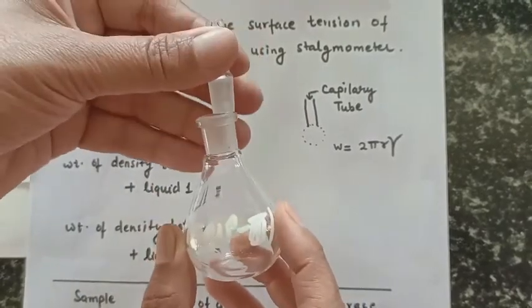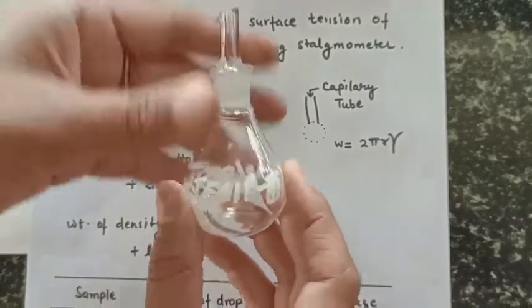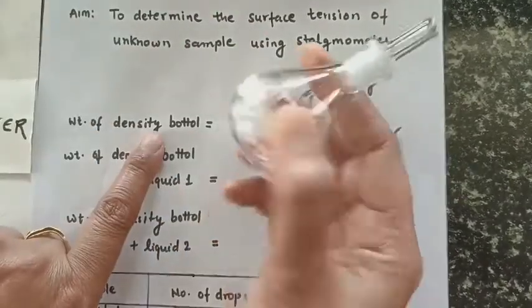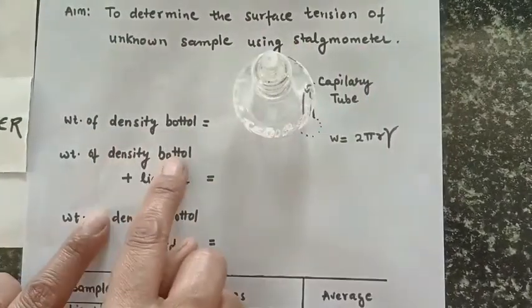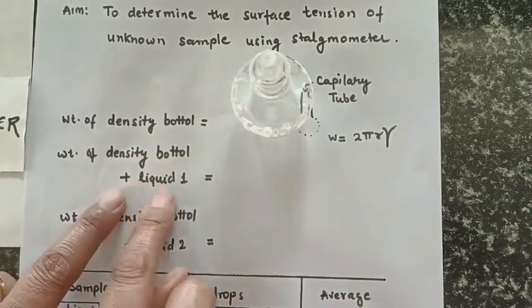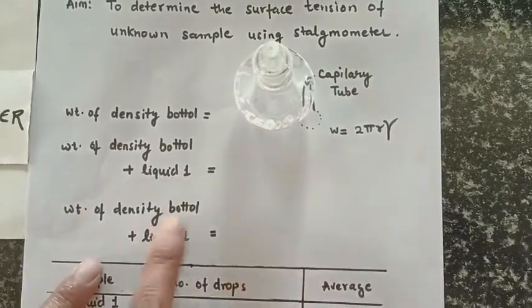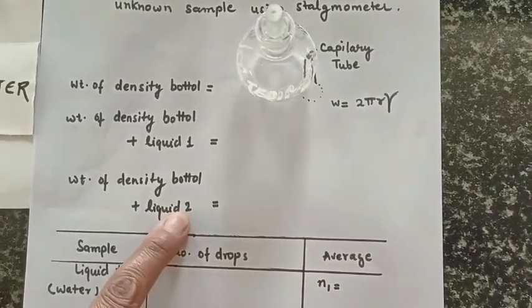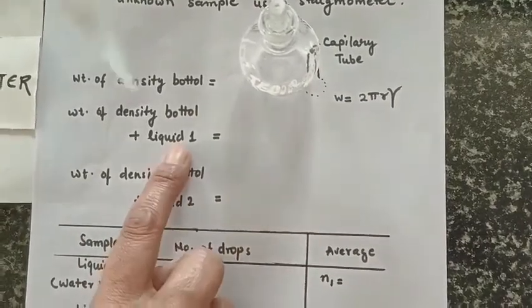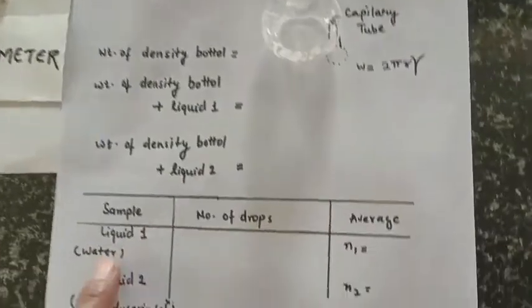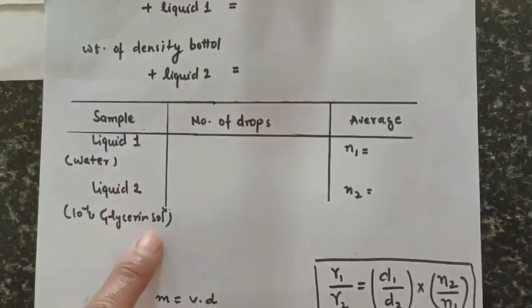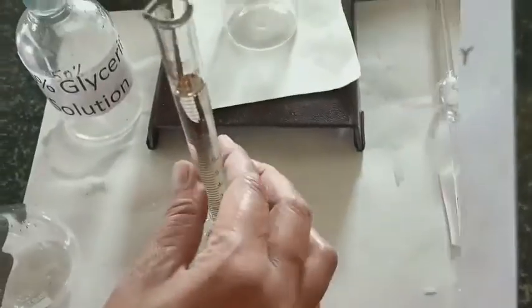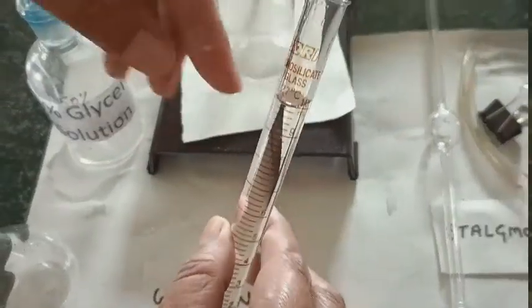To determine density or weight, we need this density bottle. This is an empty density bottle — we fill it with liquid one, take the weight, then fill it with liquid two and take the weight. Liquid one is distilled water and liquid two is 10% glycerine solution.